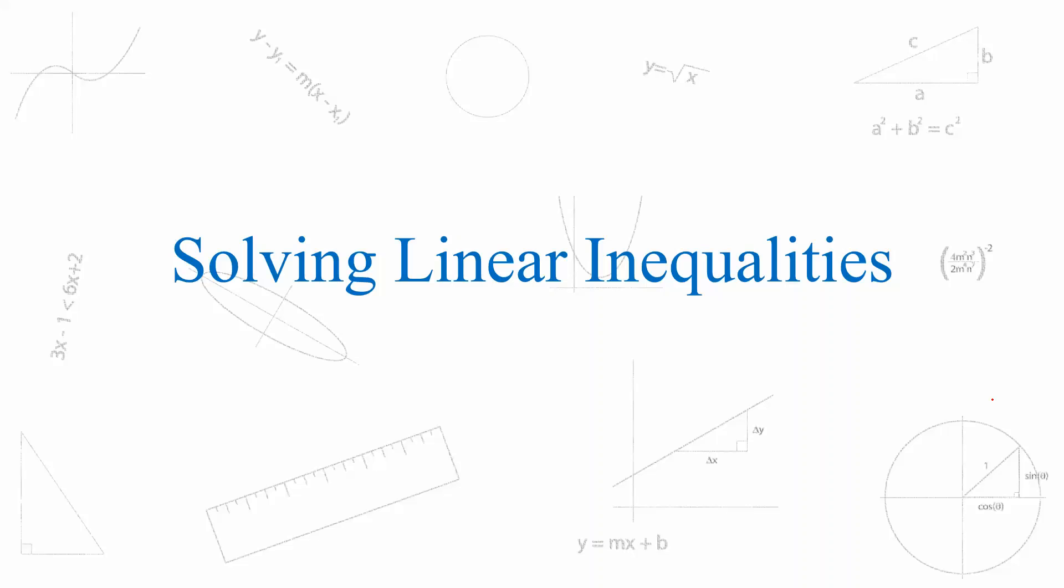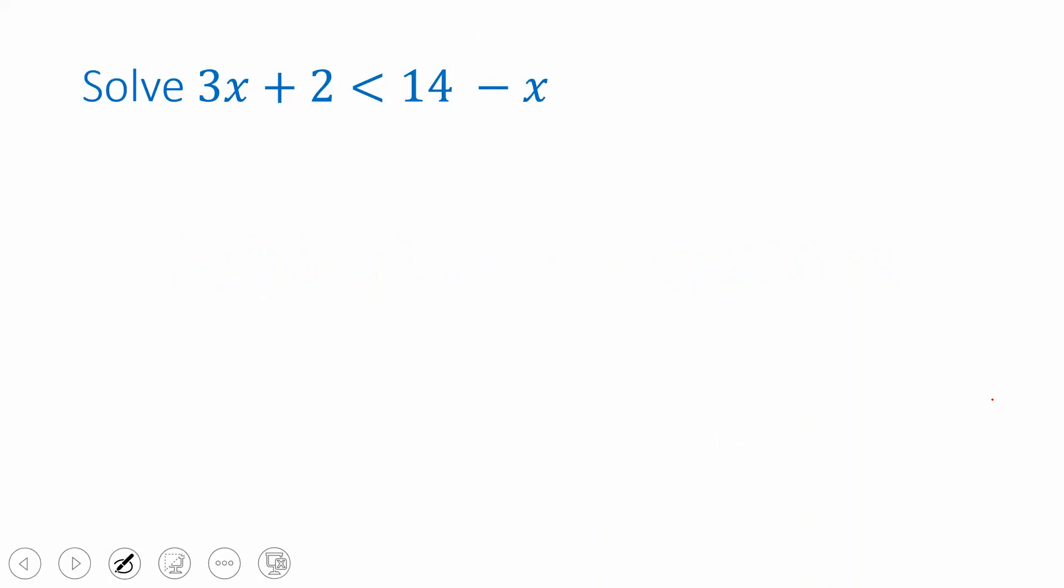This is a review of solving linear inequalities. Linear inequalities are a lot like linear equations and we're going to use basically the same algebraic approach to solving them. Again, solving means isolating the variable. We want to isolate x out of this inequality and we'll do it just like we would if we were isolating x in an equation. So the first thing we're going to do is try to get all of our x's together on one side so that we'll be closer to having only one x left in our final answer.